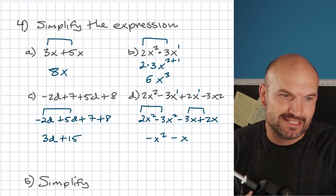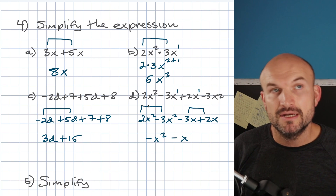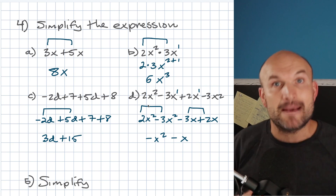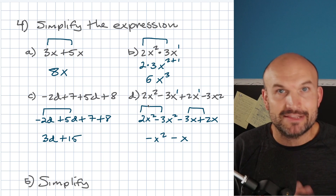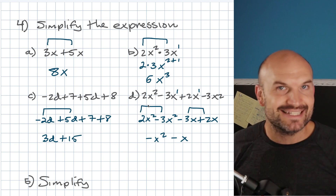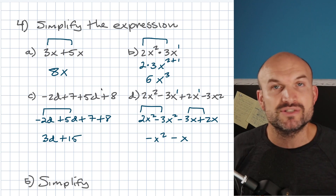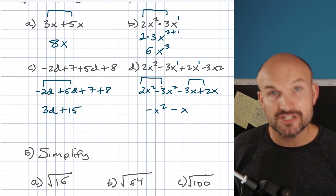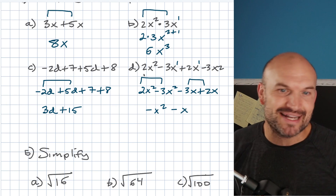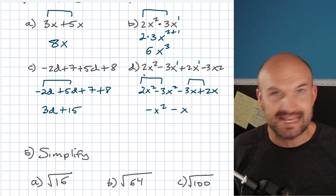Think about it like apples and oranges: if you have two apples and three apples, you have five apples — you're just combining the two and the three while the apples are preserved. That's the same idea with variables. Just make sure you're combining apples with apples and oranges with oranges — you can't combine X with X squared, just like you can't combine apples with oranges.